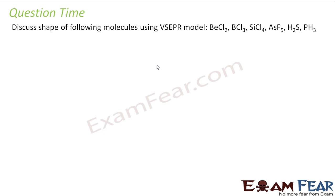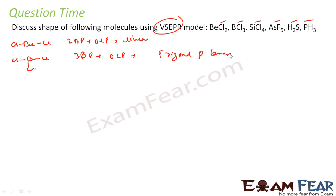We discuss the shape of BeCl2, BCl3, SiCl4, all these using VSEPR theory. So let's try this. BeCl2: Be-Cl-Cl. There is no lone pair. So it is 2 bond pair plus 0 lone pair. What does it mean? It means linear. That's what my VSEPR theory says. Then I have BCl3: B-Cl-Cl-Cl. There is no lone pair also here. The boron had 3 electrons in the valence and everything is used. So there is no lone pair here. So it has 3 bond pair plus 0 lone pair. So it is trigonal planar.